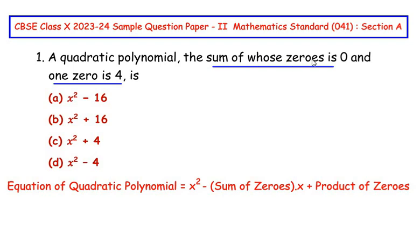Now, in the question the sum of zeros is given as zero. And since it is a quadratic polynomial we have two zeros or two roots as alpha and beta. So let me write the sum of zeros here. Sum of zeros is given as alpha plus beta where alpha and beta are zeros of the given polynomial. And sum of the zeros is equal to zero as given in the question. And one of the zero is four.